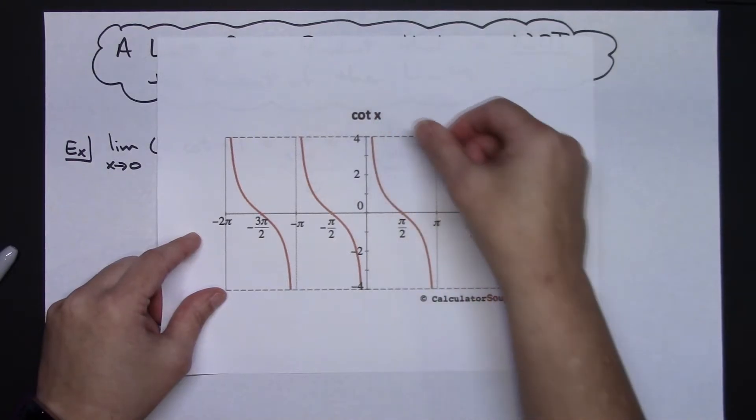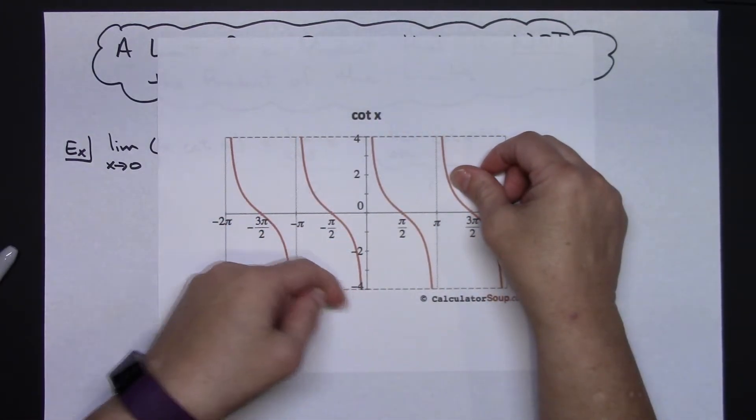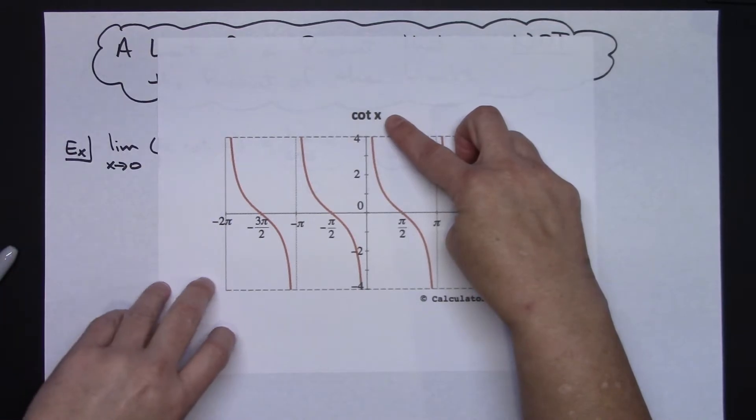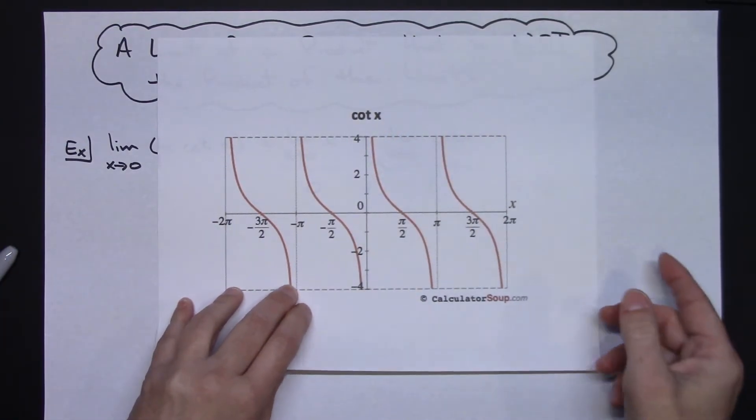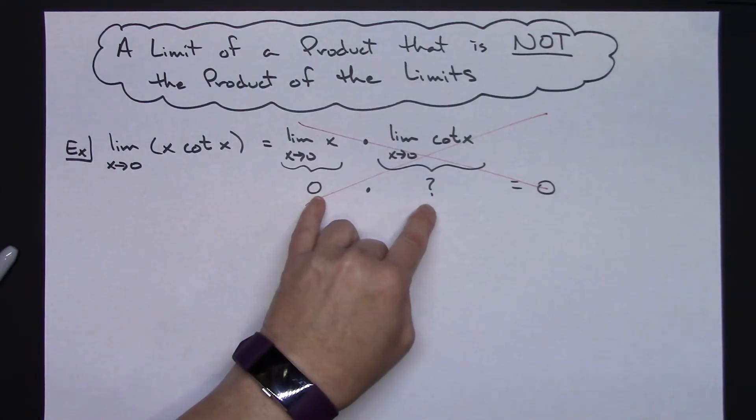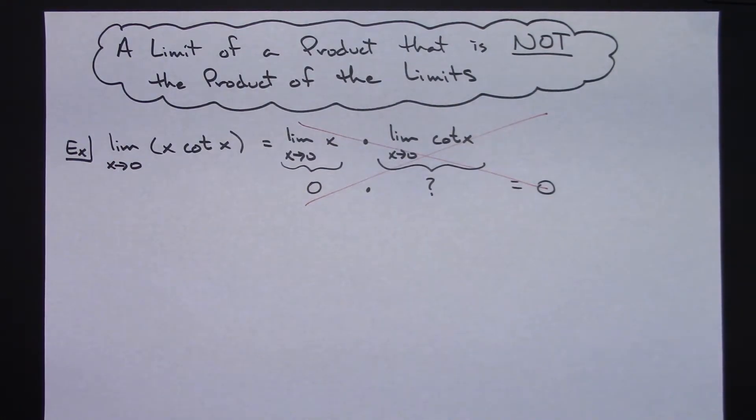So this limit by itself does not exist. So because that limit doesn't exist, I cannot apply this limit theorem. So then you're going to have to have another way to do this.